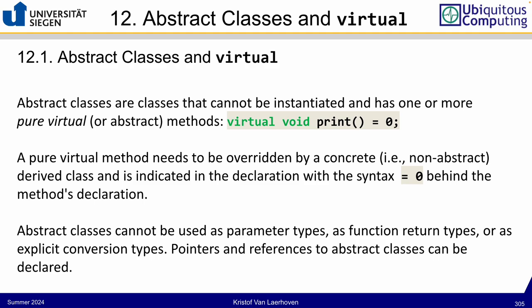It can also facilitate communication between developer teams — one developer defines the method signature and forces child classes to follow that procedure and implement it. Abstract classes cannot be instantiated, cannot be used as parameter types directly, cannot be return types, and you can't convert to them, though you can use pointers or references to them for polymorphism.